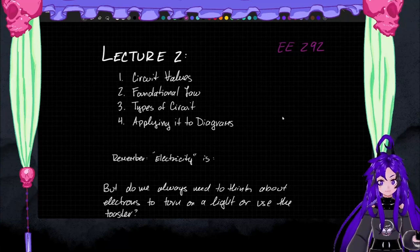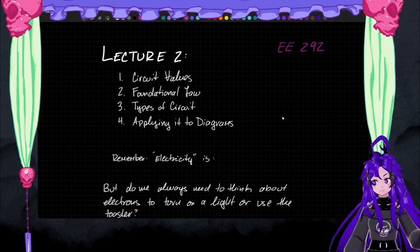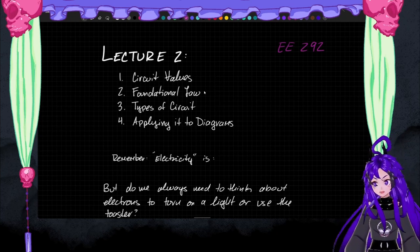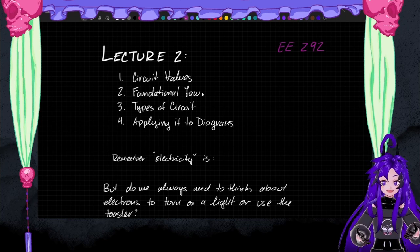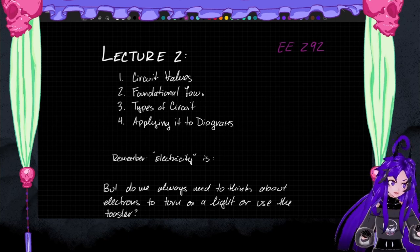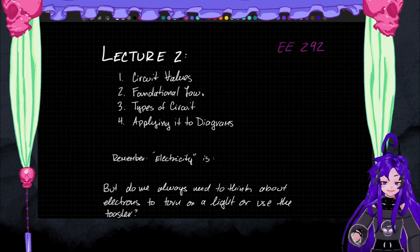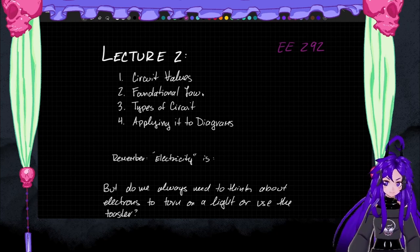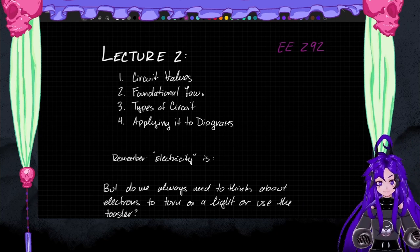Hey! Welcome back! This is our second lecture in the fundamentals of electrical and computer engineering. Today we are looking at what our core circuit values really mean, the fundamental law that governs circuits, the types of circuits — specifically AC and DC and what that really means — and finally applying it to diagrams and figuring out how to talk the same language about electricity. Not a super mathy lecture; that'll start next week.